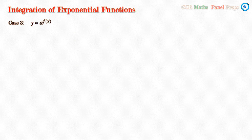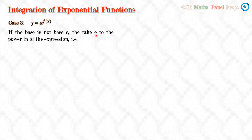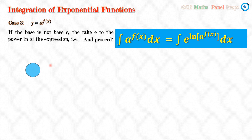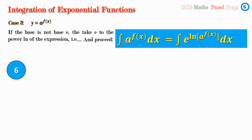Now we look at integrals of the form a^(f(x)) where the base is not e. When the base is not e, we take e to the power of the natural log of the expression: a^(f(x)) = e^(ln(a^(f(x)))). We then proceed using the rules of exponential functions. Whenever we have a^(f(x)) dx to integrate, we raise e to the ln of that quantity.